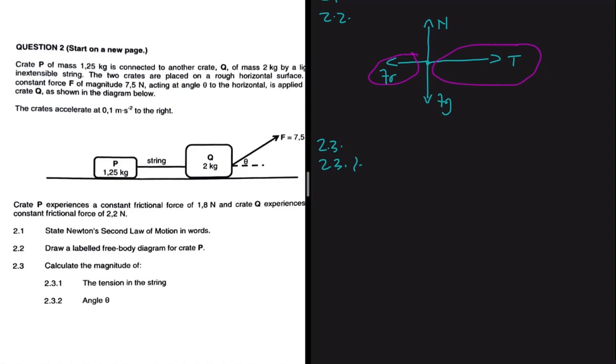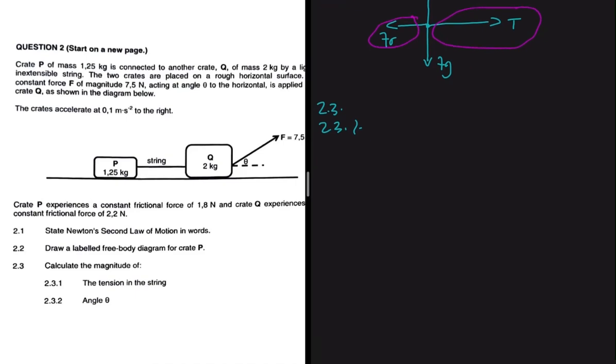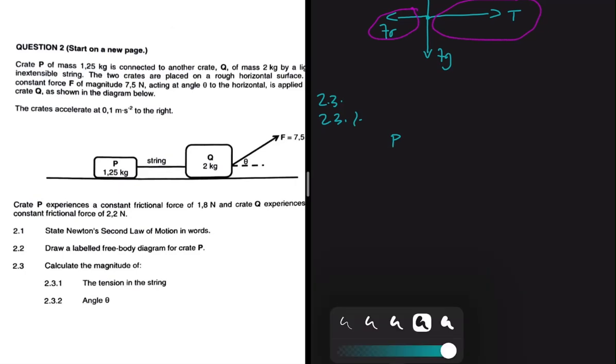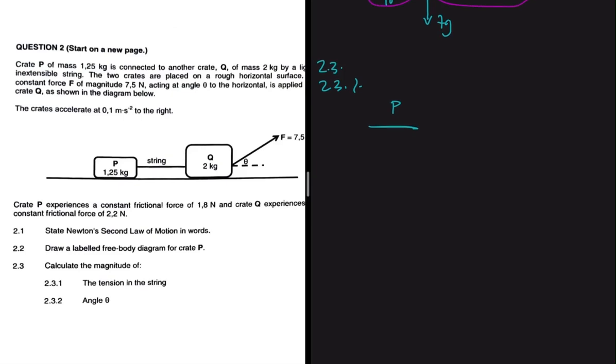So we're going to say for P, and we underline it for the sake of clarity - we're showing the examiner that we know exactly what we're talking about. Obviously we have F_net equals ma, being the second law of motion. We start with the bigger force and then subtract all the opposing smaller forces.